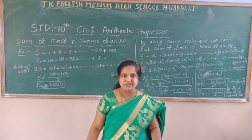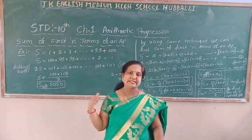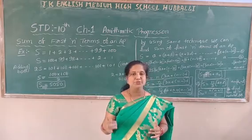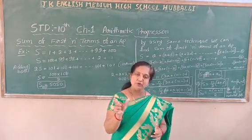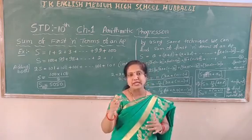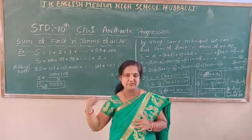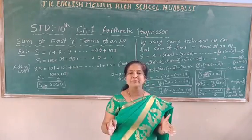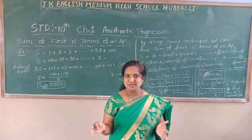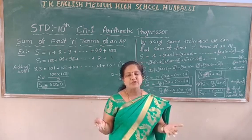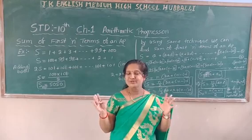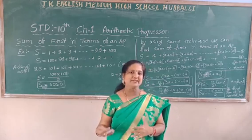All three formulas you can use to solve the sums. First formula: Sn equals n by 2 into 2a plus n minus 1 into d. Second: Sn equals n by 2 into a plus a sub n, when you know n, a, and a sub n. Third: Sn equals n by 2 into a plus l, when you know n, first term and last term. Fourth: Sn equals n into n plus 1 by 2 for sum of natural numbers. Please children, you have to remember these formulas — read, write, and practice many times.